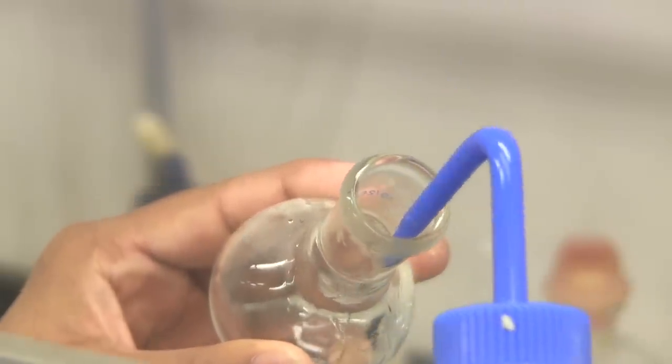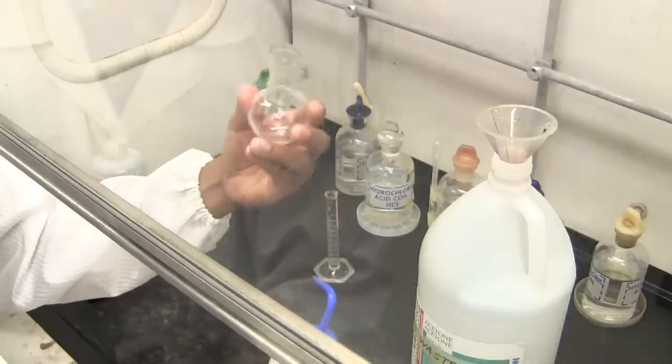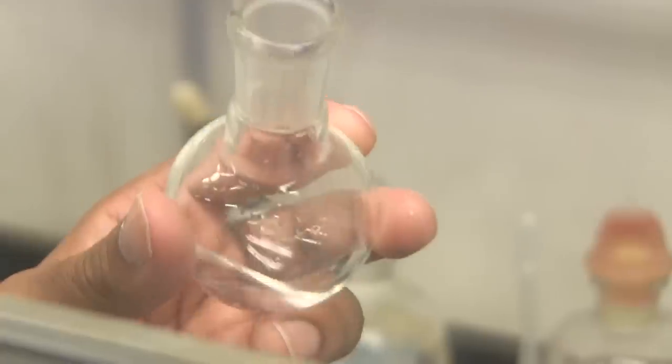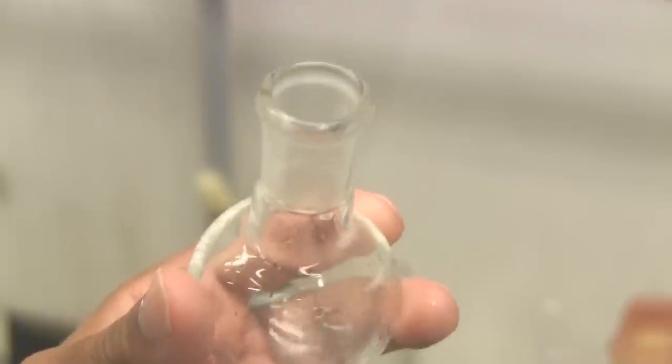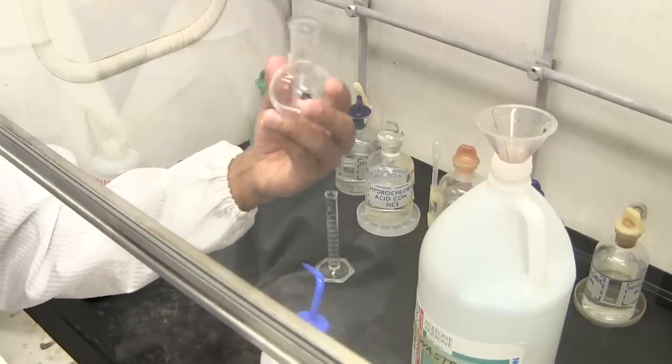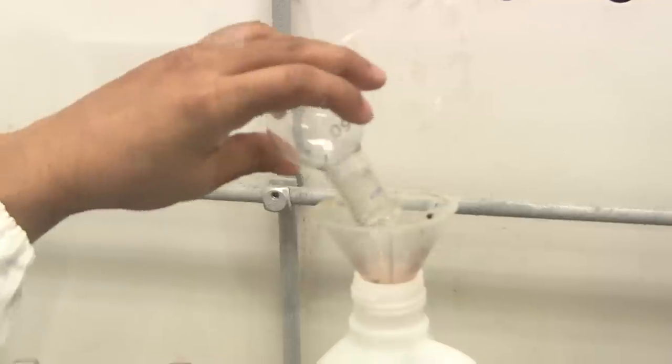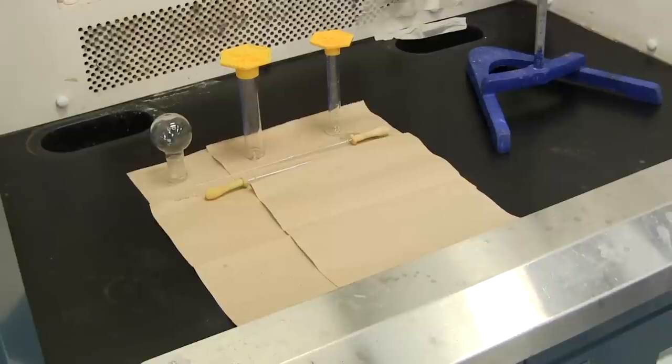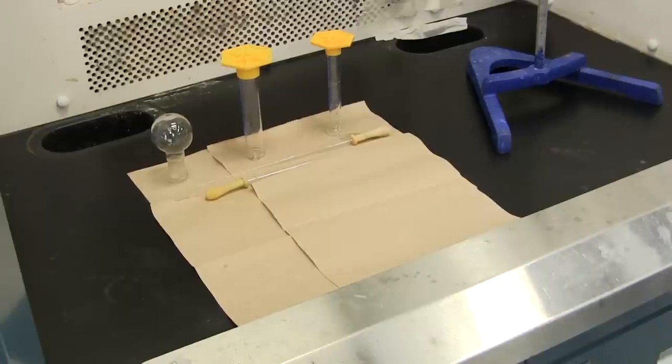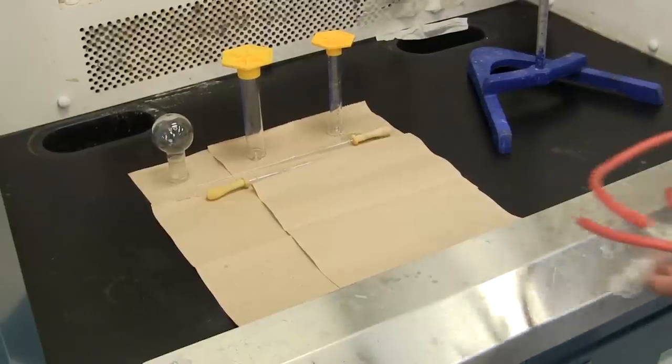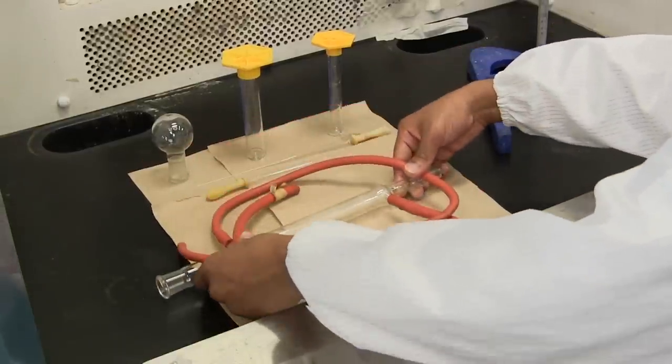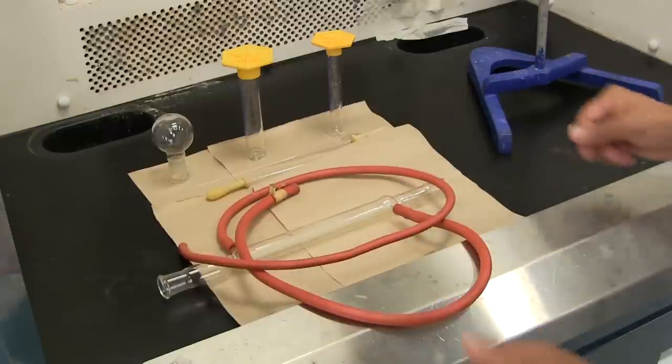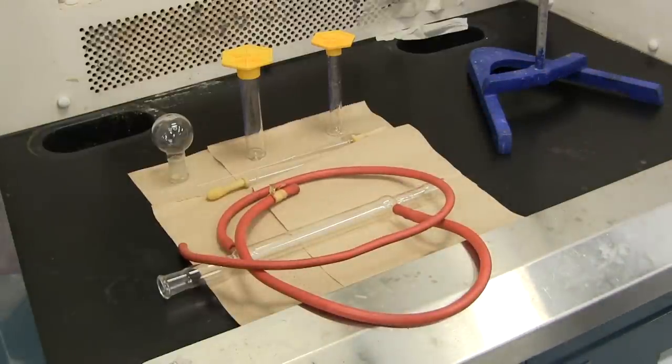Ensure that there is absolutely no water remaining in or on the glassware as the Grignard reaction is very sensitive to moisture. It will not proceed if it comes into contact with any amount of water no matter how small. Once you have rinsed the glassware with acetone, invert them onto paper towels and set them aside to dry for roughly 10 minutes to remove any residual acetone which can cause unfavorable side reactions.